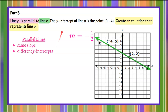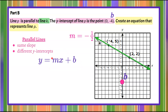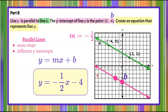Now we need to find the y-intercept. We're told that the y-intercept of line p is the point (0, -4), so we're already given all the information we need. We'll use slope-intercept form: y equals mx plus b, where m is the slope and b is the y-intercept. The line is parallel, so it has a slope of negative 1/2, and the y-intercept is negative 4. So the equation is y equals negative 1/2 x subtract 4. We can rise 1 and run negative 2 to plot another point, draw our line, and we can see they are parallel.